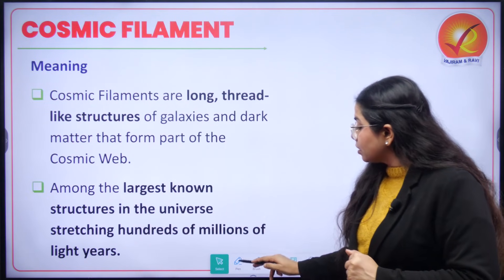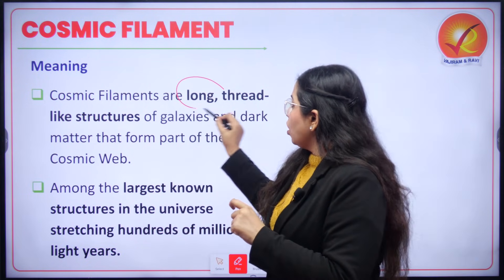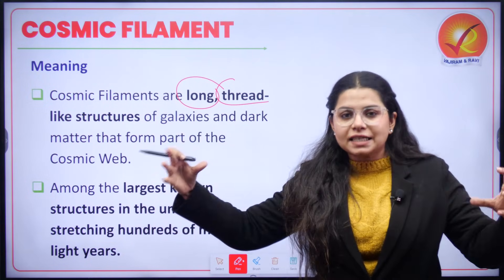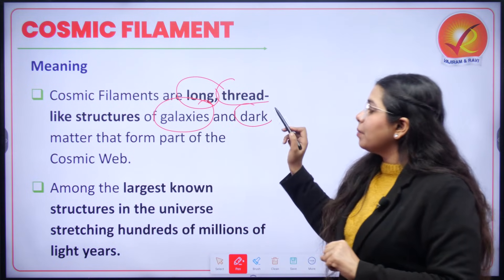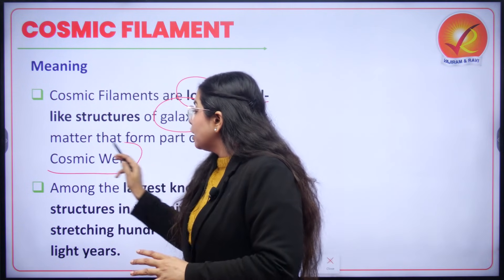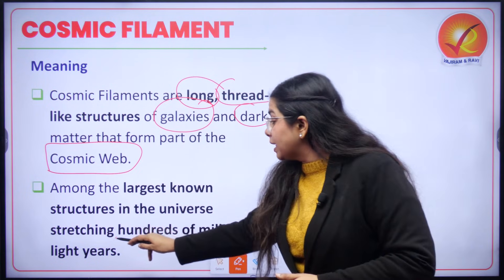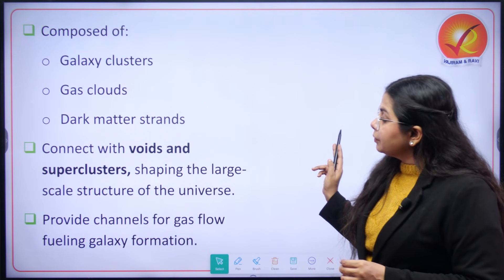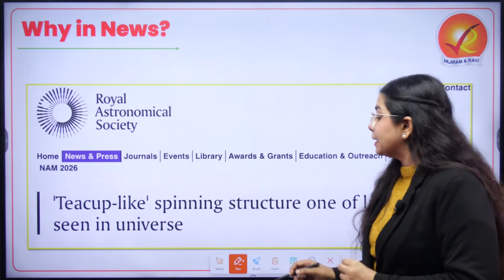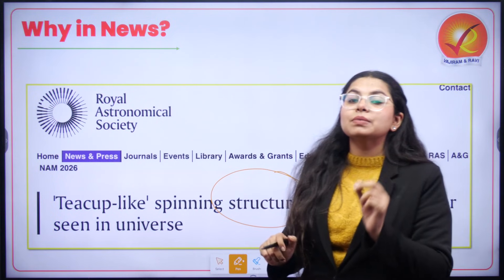We will now move to the next term: cosmic filament. When we talk about cosmic filament, it means a long thread-like structure, but this structure is of galaxies. You can imagine galaxies have been threaded and brought together — galaxies and dark matter — and this is what forms the whole cosmic web. When talking about the largest known structures in the universe, present across hundreds of millions of light years, these are cosmic filaments. Recently, the Royal Astronomical Society highlighted that a teacup-like spinning structure has been seen and it is one of the largest seen in the universe.